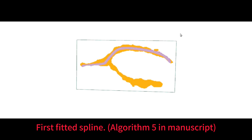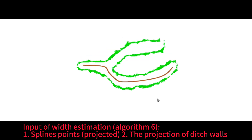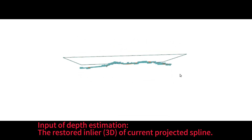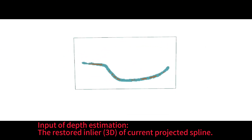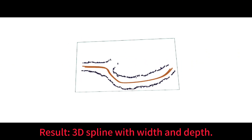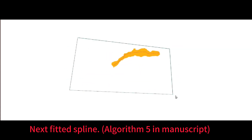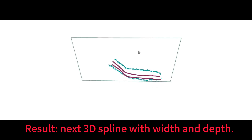The built 2D spline and the projection of ditch walls are used for width estimation. By applying algorithm 5 in our manuscript, the first best 2D spline is built. Then the inliers of the projected 2D spline are restored into original 3D coordinates for depth estimation. The shape of each ditch is described by a 3D spline with pairs of points indicating the width. After generating one part of the ditch, the processed part is removed from the original point cloud, and the remaining part becomes the input for the next part's generation. The same processes are applied to the remaining point cloud, and the generation stops when no parts remain.